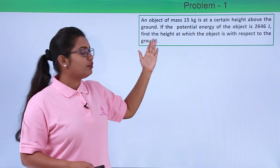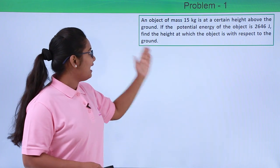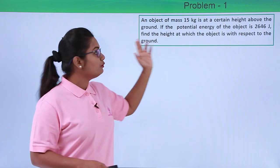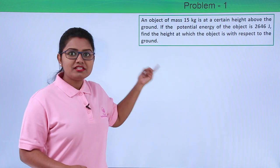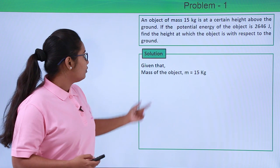If the potential energy of the object is 2646 joules, find the height at which the object is with respect to the ground. First of all, we need to list out what is given in the question.